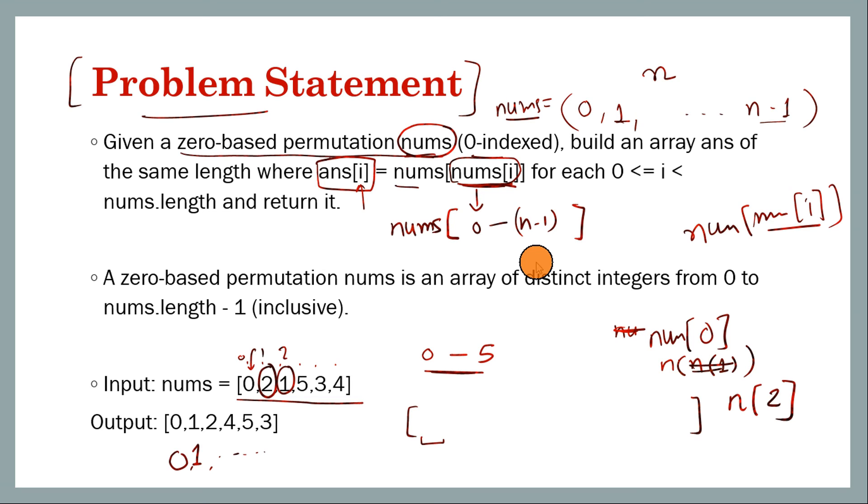So what is the time complexity here? We iterate through this array once and set the value of the ith element, so O(n). Space is again O(n) since we are returning a vector of the same length.